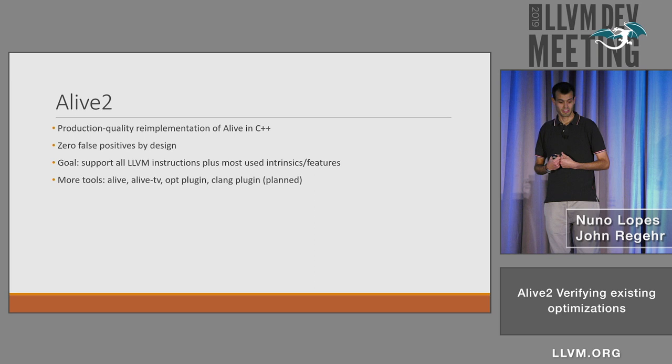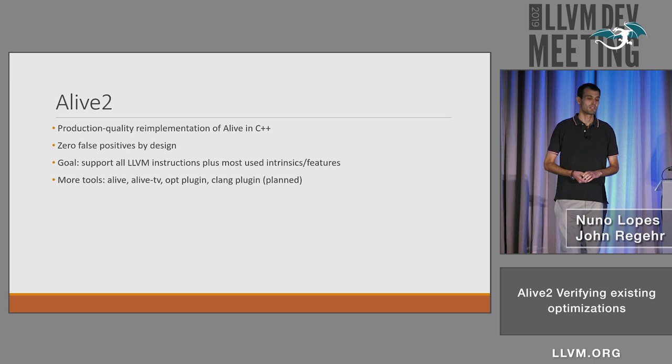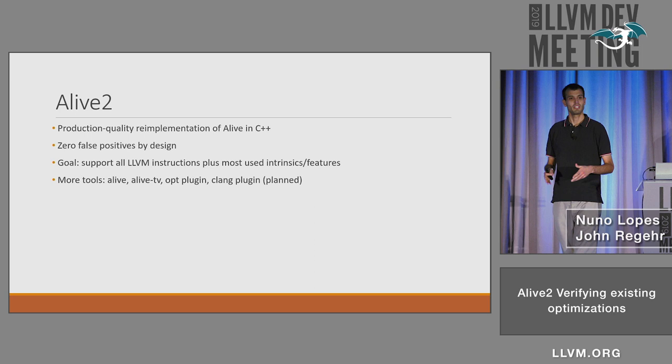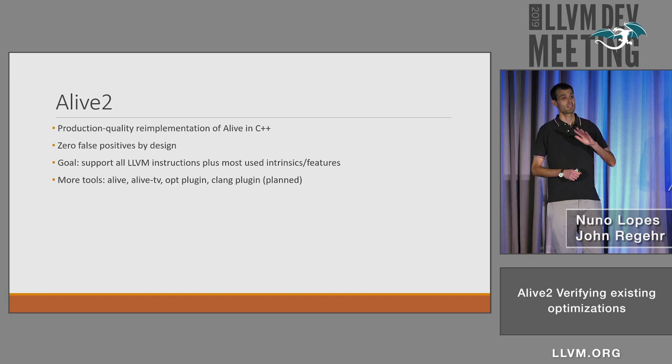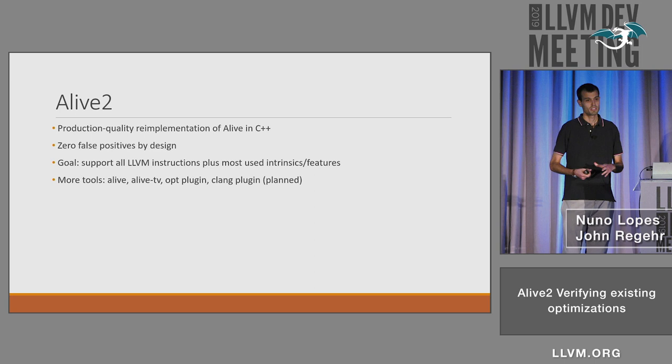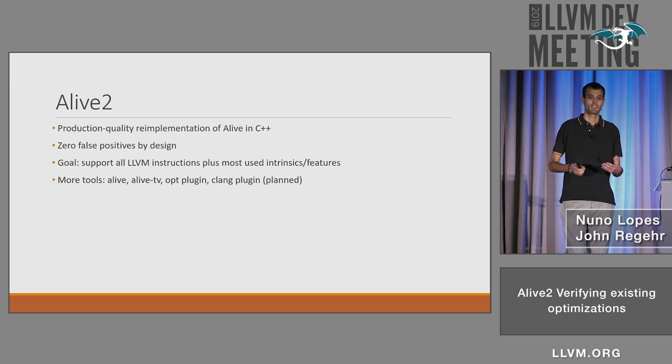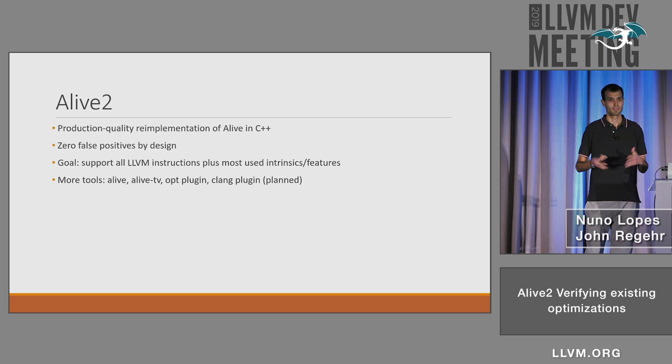Alive 2 is the new thing we have this year. It's essentially a complete reimplementation from scratch of Alive, now in C++, so it's way faster than old Alive and it's production quality. We emit zero false positives — it will never tell you an optimization is buggy if it's not. The goal is to support all of LLVM, at least all the core LLVM, and the top most-used intrinsics. We don't have bandwidth to support all intrinsics, but the mostly used ones.